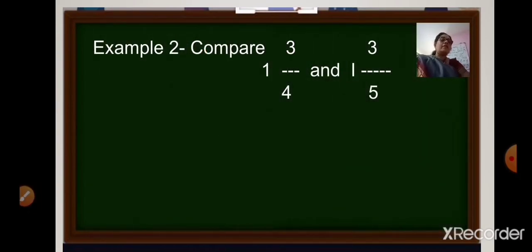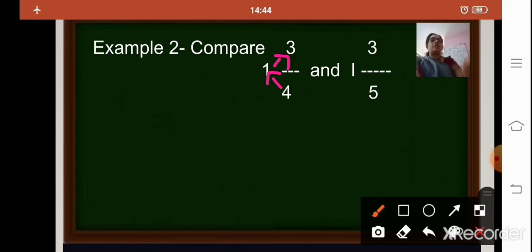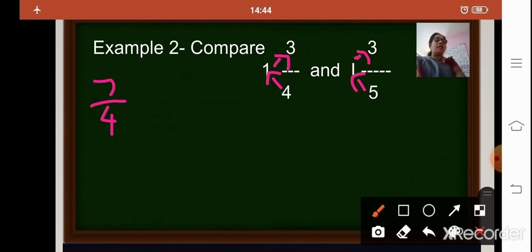Now here is a mixed fraction: 1 and 3 upon 4, and 1 and 3 upon 5. When you have a mixed fraction, you first convert it into an improper fraction. For the first one: 4 ones are 4, plus 3, gives 7 upon 4. For the second fraction: 5 multiplied by 1 plus 3 gives 8 upon 5. Now you have two improper fractions.